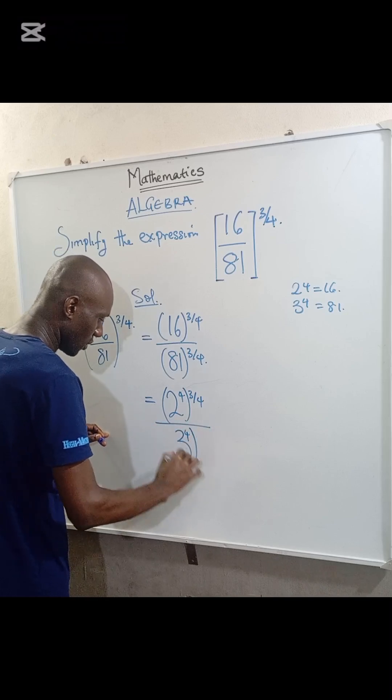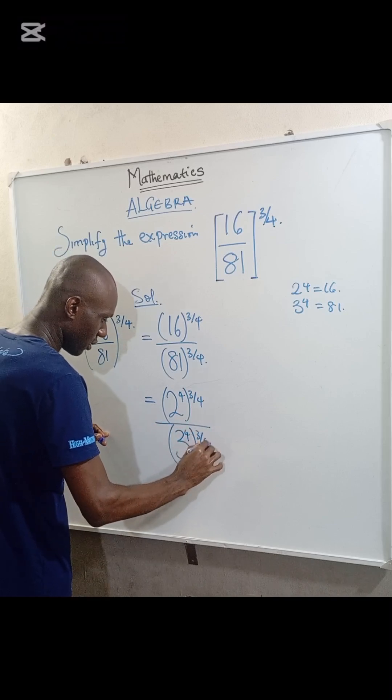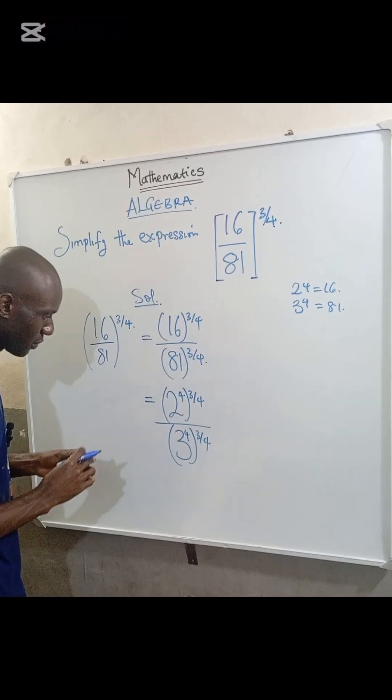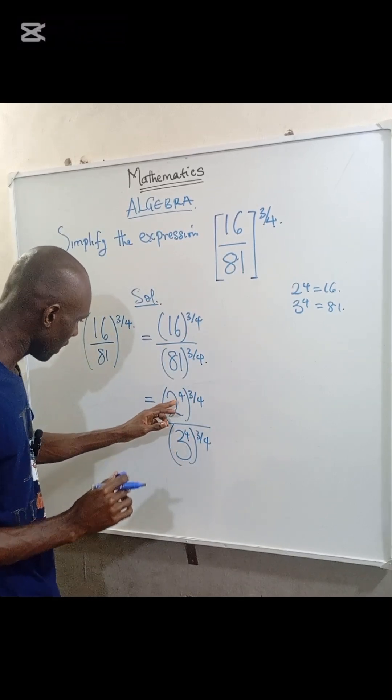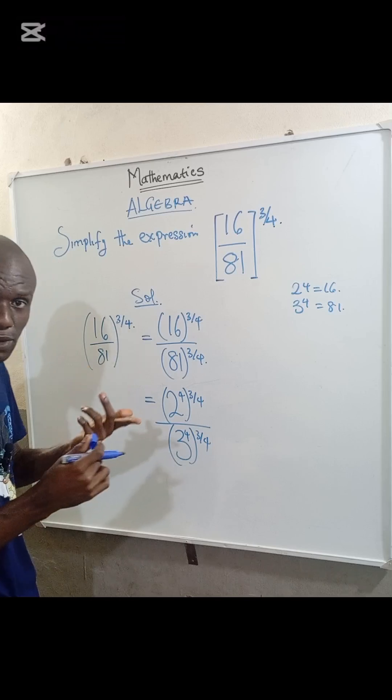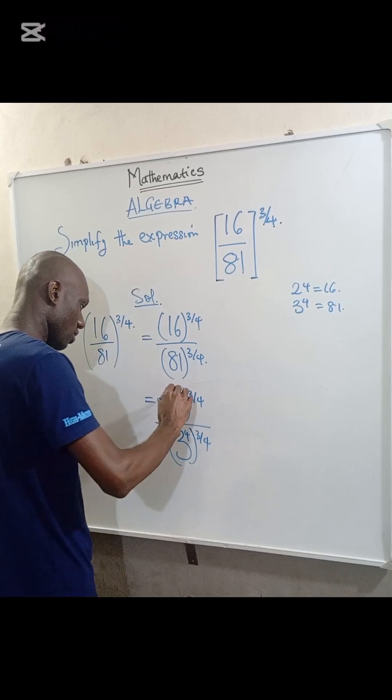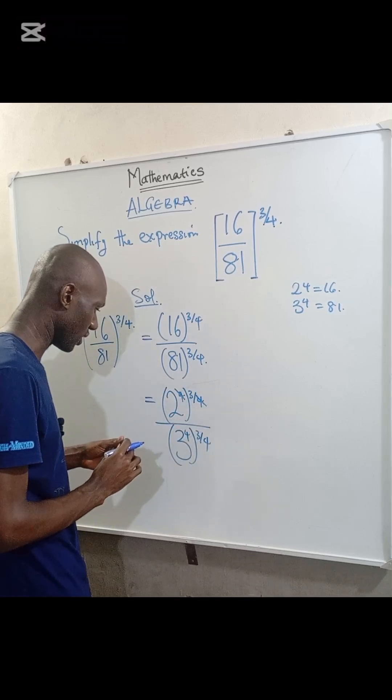Now, if you look at the indices, there are terms that can cancel out. So 4 can cancel out 4 here, and also 4 here can cancel out 4 here.